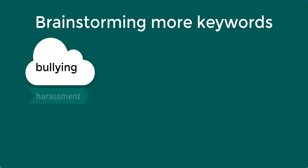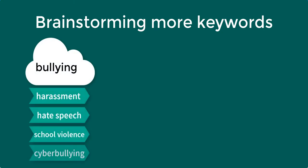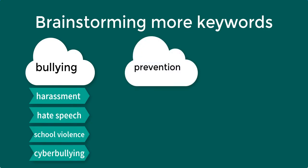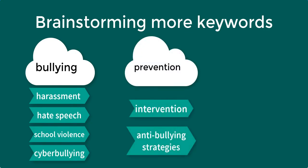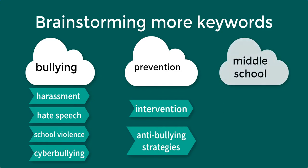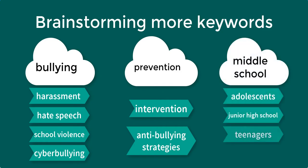Next you should brainstorm alternate keywords to use in your search. This is important because the keywords you might have initially thought to search might not be the same as the keywords used in academic articles. Searching similar words will retrieve different results even if these words are synonyms or different spellings.